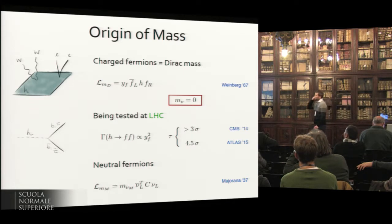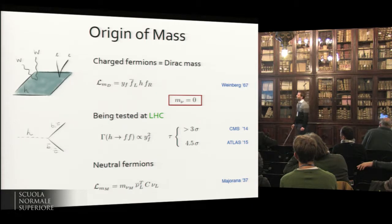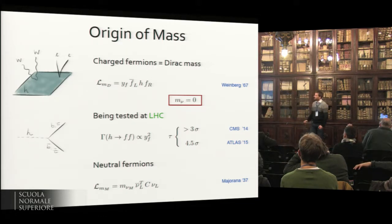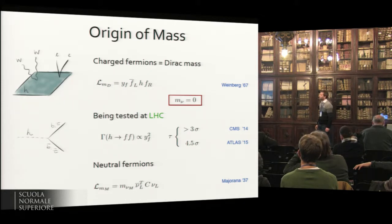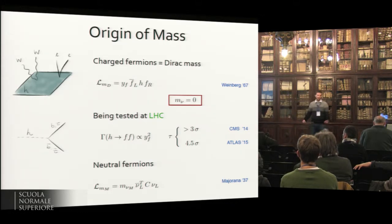Just one slide to remind you how we test the origin of neutrino mass in the standard model. All the charged fermions have Dirac masses, and there is a unique relation between the mass of a charged fermion through the Dirac-Yukawa coupling to the decay of the Higgs boson. For example, for the tau, we have clear evidence that it's getting its mass from the Higgs condensate. We also know that neutrinos are massless in the standard model, and the natural question is how to account for neutrino masses and whether they have anything to do with the standard model Higgs condensate.